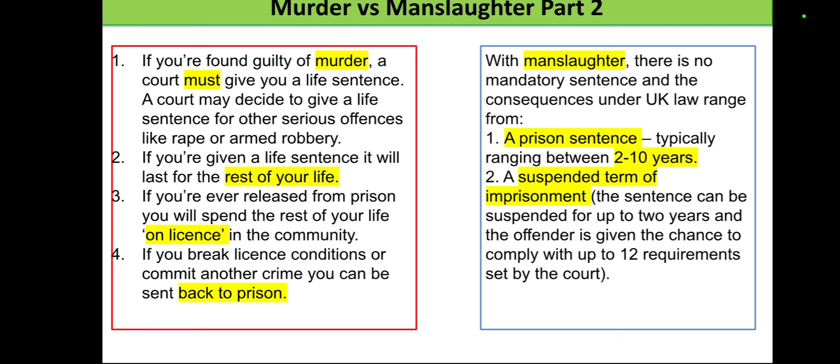Number two is a suspended term of imprisonment. This means the sentence can be suspended for up to two years, and the offender is given a chance to comply with up to 12 requirements set by the court. If you meet all 12 requirements, you will not go to prison — similar to a structured program where completing the steps fulfills the court's conditions.